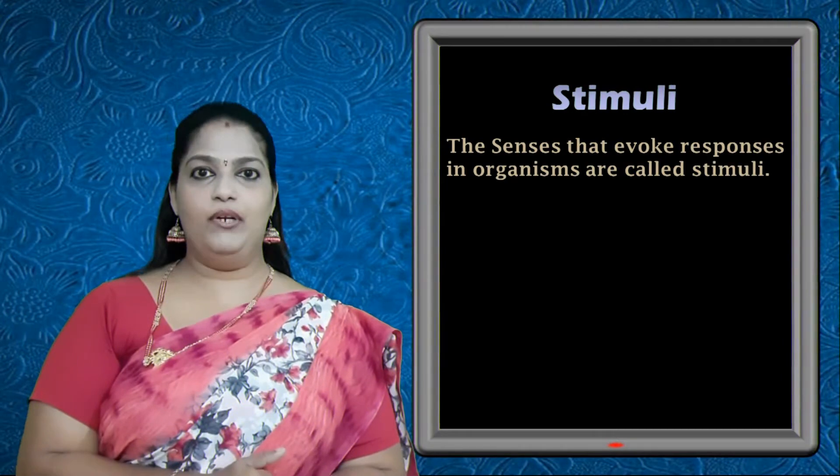Let's see the classification of stimuli based on their properties. First, external stimuli — from the term itself you can guess the meaning: it comes from outside, that is from the environment. If the stimulus is from outside the body of an organism, we call it external stimuli. Internal stimuli are those that come from within the body. So stimuli can be broadly classified into two: external stimuli from outside, and internal stimuli from within the body.